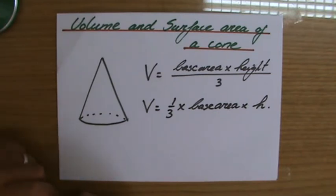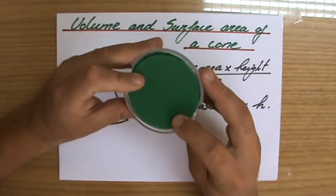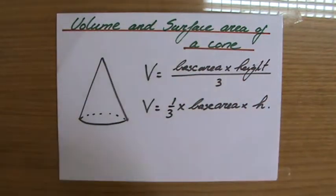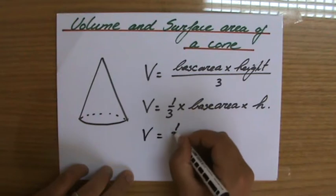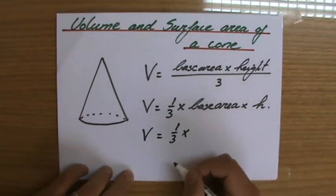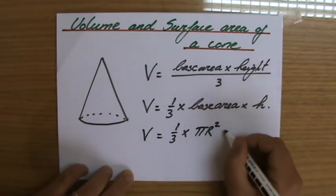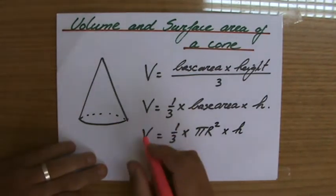You don't necessarily have to remember that, but what kind of a figure is the base of a cone? That is a circle. So the volume of a cone equals a third times area of a circle, pi r squared, times the height. And again that will be given to you.